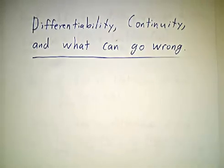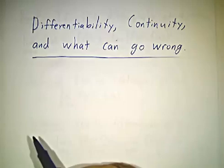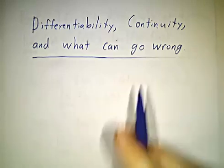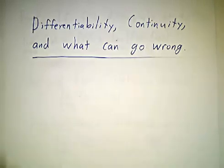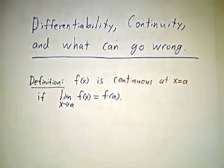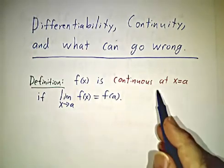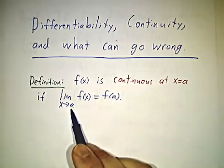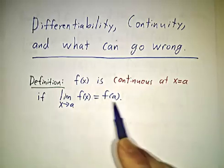In this video, we're going to try to tie together some of the ideas that we've been talking about. A while back, a couple sections back, we learned the definition of a continuous function. A function is continuous at x equals a if the limit as x approaches a of f of x is f of a.